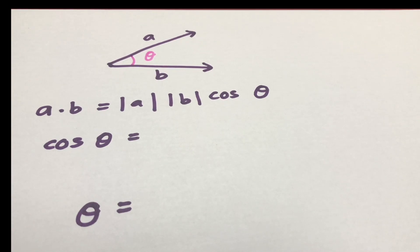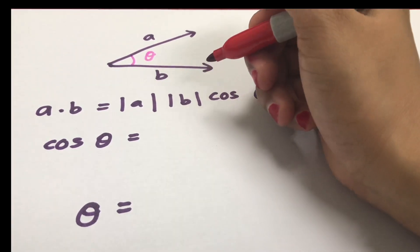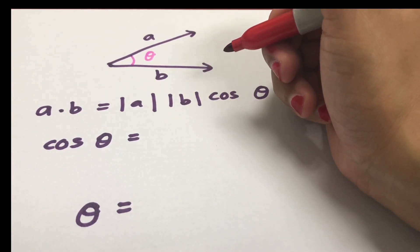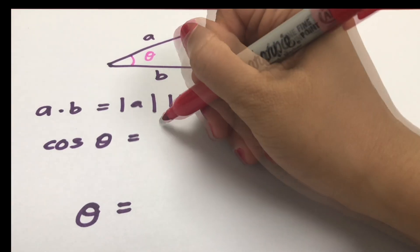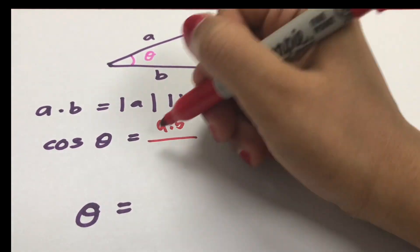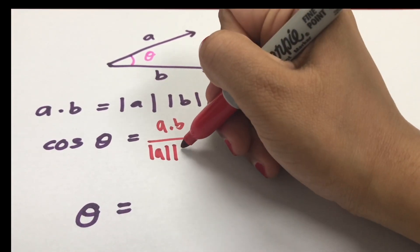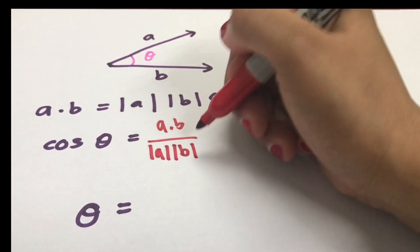Another method used to find the dot product of two vector functions is by multiplying the magnitude of both vectors and the cosine of the angle between them. By modifying this formula, we get cos θ equals a dot b divided by the magnitude of a multiplied by the magnitude of b.